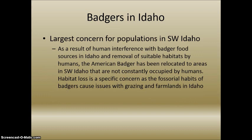The largest concern for populations here is human interference with badger food sources in Idaho and the removal of suitable habitats. The American badger has been relocated to areas in Southwest Idaho not constantly occupied by humans. Habitat loss is a specific concern as the fossorial habits of badgers cause issues with grazing and farmlands. Most BLM land in Southwest Idaho is used for open grazing or free range cattle, and badger burrows have been known to cause issues such as broken legs in cattle, which has caused human predation of the animal to become very significant here.